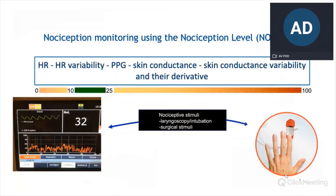The nociception level index gives you an indication of the level of nociception, ranging from 0 to 100. We try to keep the NOL in between 10 and 25. Several of our studies indicate that that's the best range of NOL values corresponding with little nociception, while values above 25 indicate intense nociception and values below 10 indicate, in fact, overdosing of the opioids.